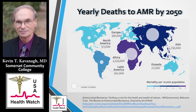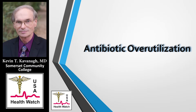This map shows what is predicted for 2050. In North America, we're looking at 317,000 deaths a year from these types of infections. We're going to talk about two of the key drivers of infections, which we really need to focus on because both are important.